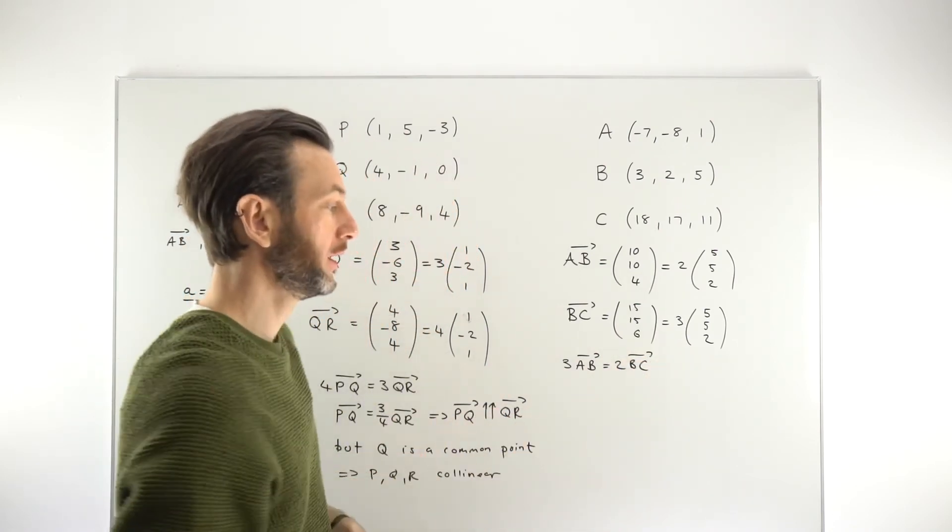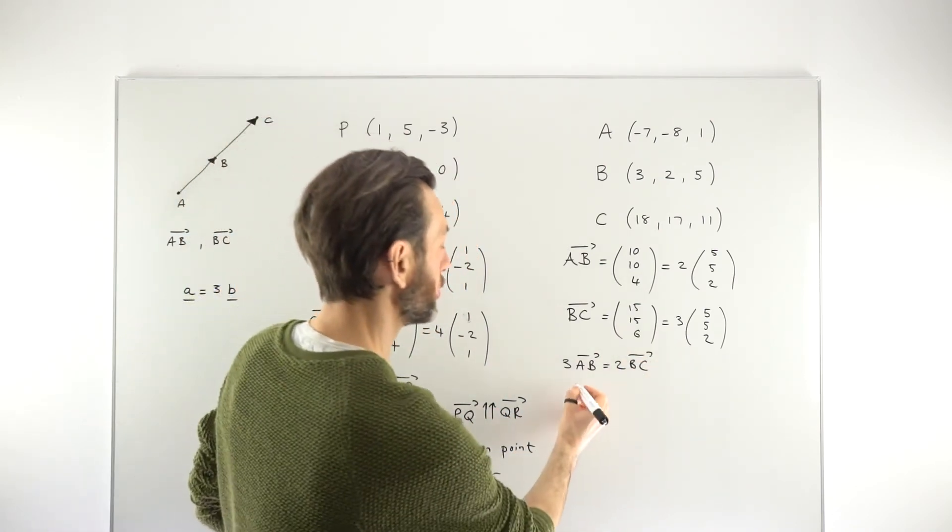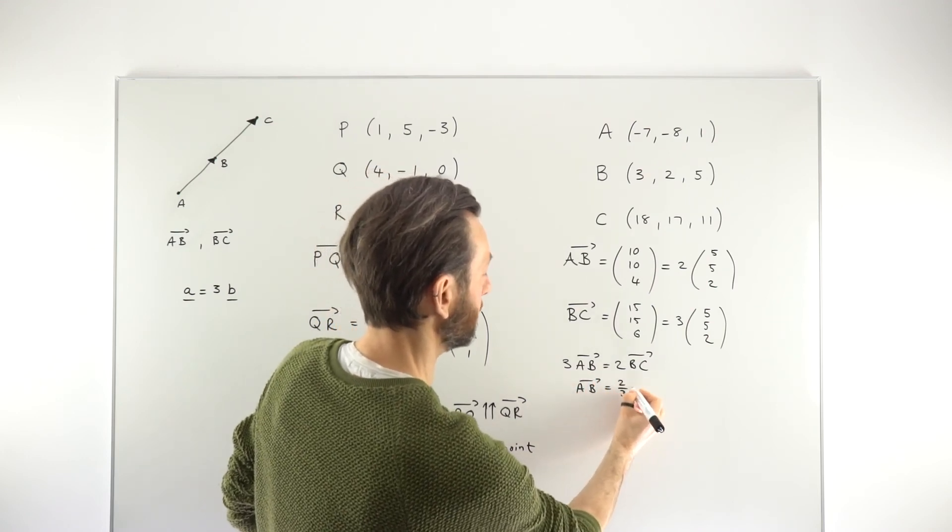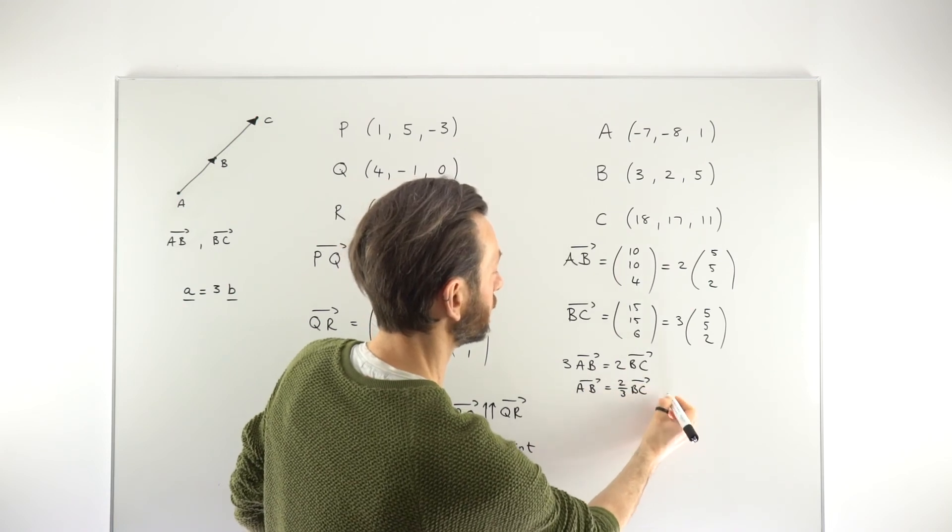And again, you could take that further if you wish. You could say that AB is equal to 2 over 3 BC. Or you could do it the other way around. You could say that 3 over 2 AB is equal to BC.